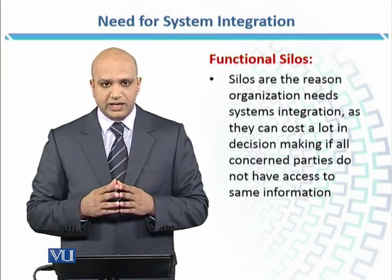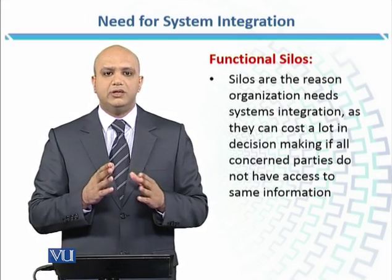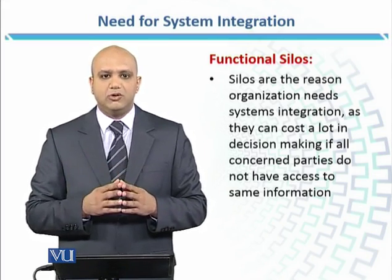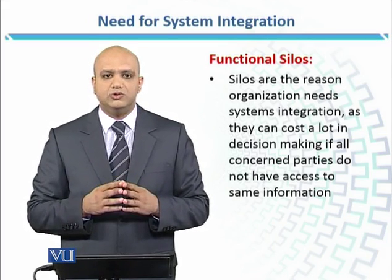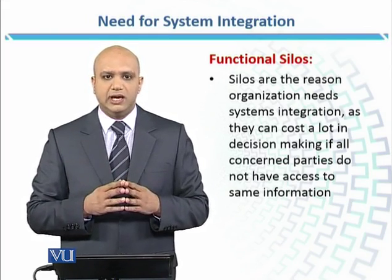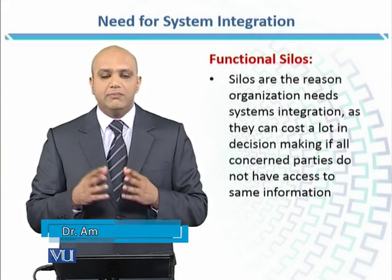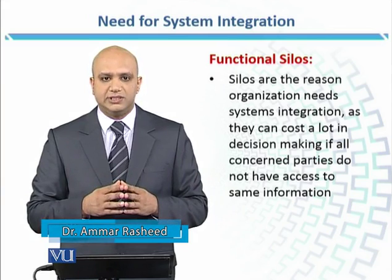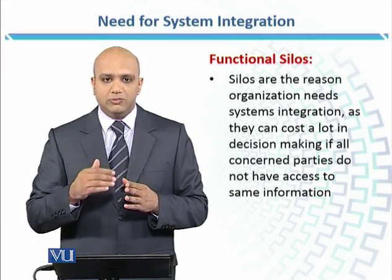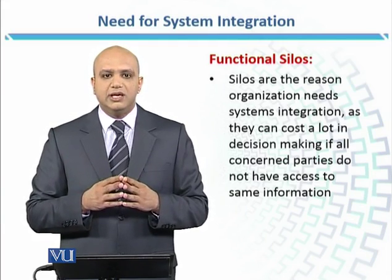If all concerned parties do not have access to the same information — you have different departmental units, and every departmental unit performs a different function and generates data. If a company has different information systems, then the units will not pass information on. The reason could be differences between information systems, or it is possible that one departmental unit uses a manual system while the other uses a computerized information system. That is the one and only reason companies need system integration.